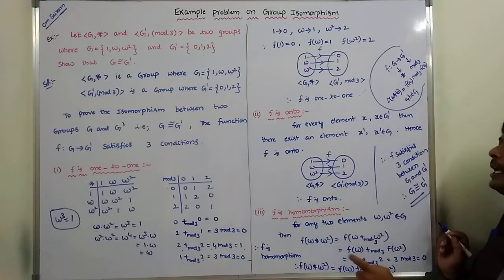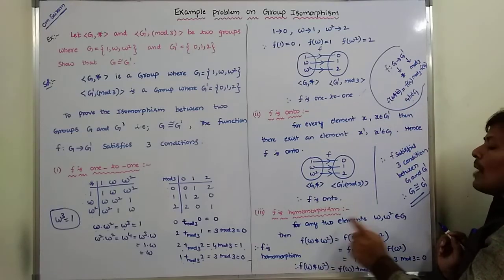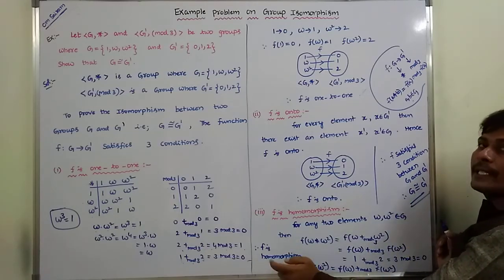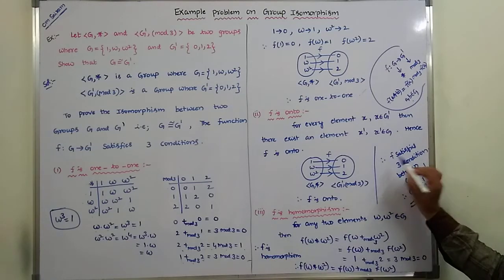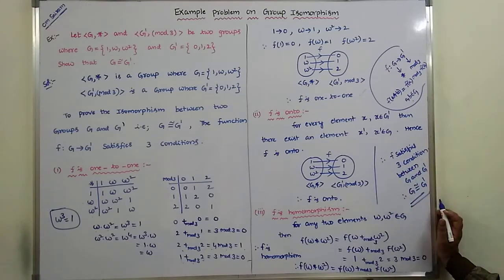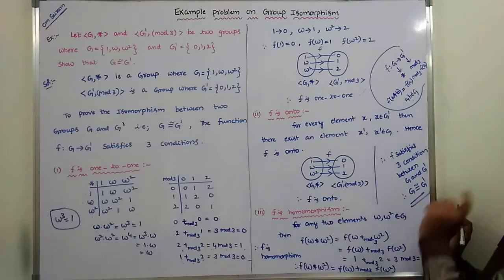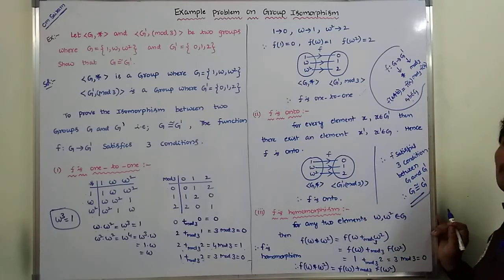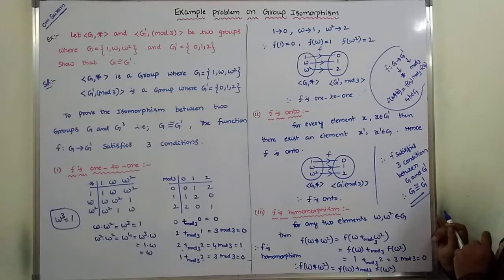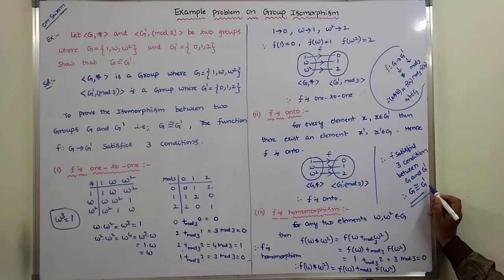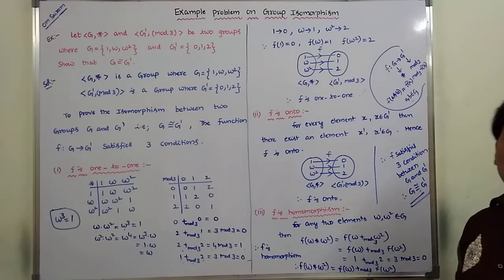The function f mapping from G to G' satisfies all three conditions: one-to-one, onto, and homomorphism. By satisfying these three conditions between the two groups G and G', we can conclude that G is isomorphic to G', written with the isomorphic symbol.